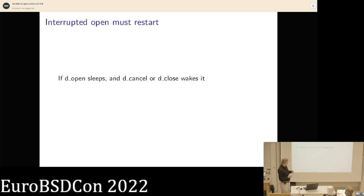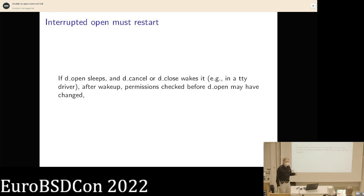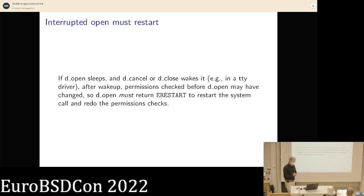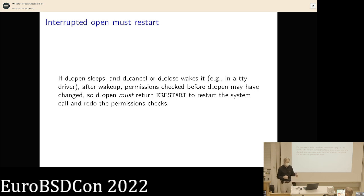One important detail: if dopen sleeps — like waiting for a TTY — and dcancel or dclose wakes it, permission checks may have already happened by the time dopen went to sleep. So dopen absolutely has to return ERESTART; it can't loop back in a CV_wait or tsleep loop. It has to give up and say restart the system call so permission checks are redone. Many TTY drivers would just loop incorrectly — you need to return ERESTART.